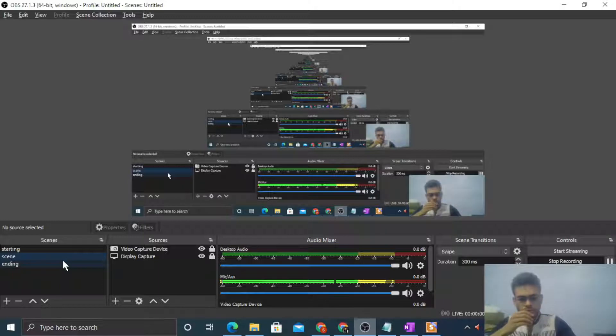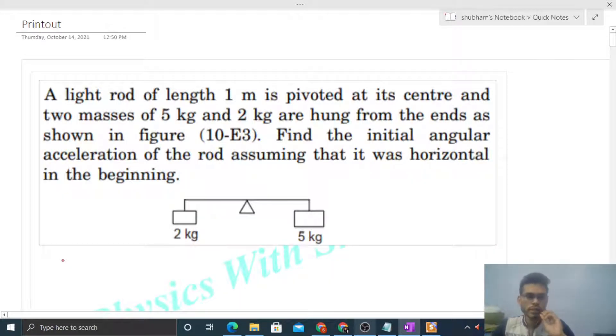Okay, hi everyone. Today let's discuss this interesting problem. It says a light rod of length 1 meter is pivoted at its center, and two masses of 5 kilogram and 2 kilogram are hung from the ends as shown in the figure. Find the initial angular acceleration of the rod assuming that it was horizontal in the beginning.